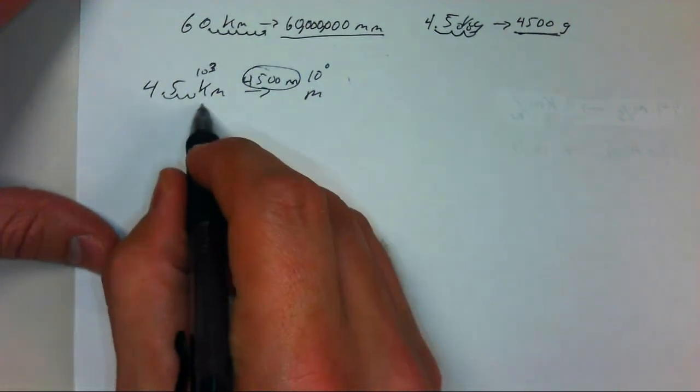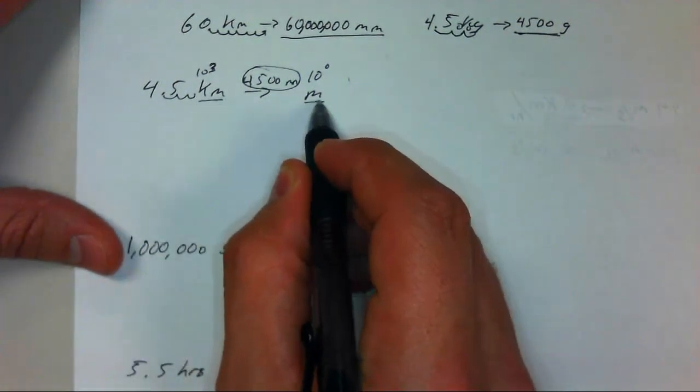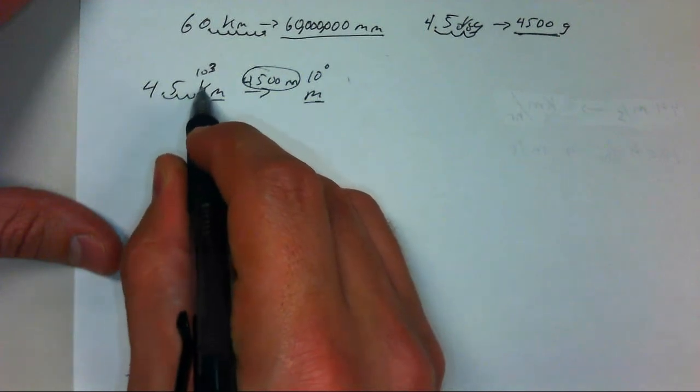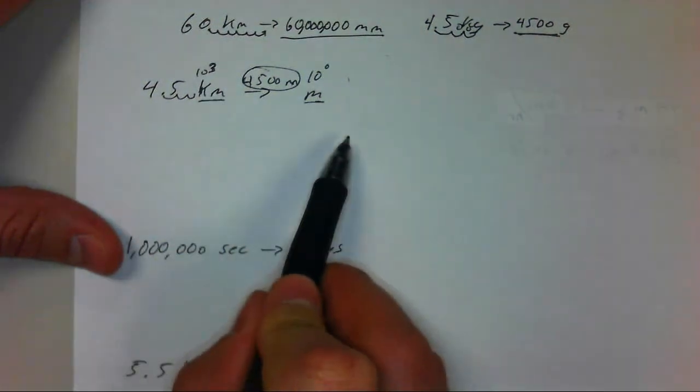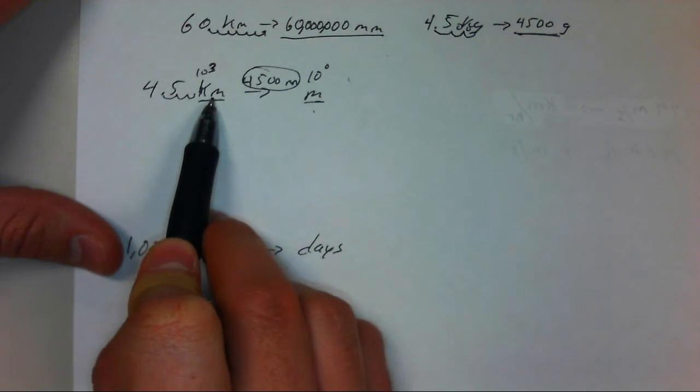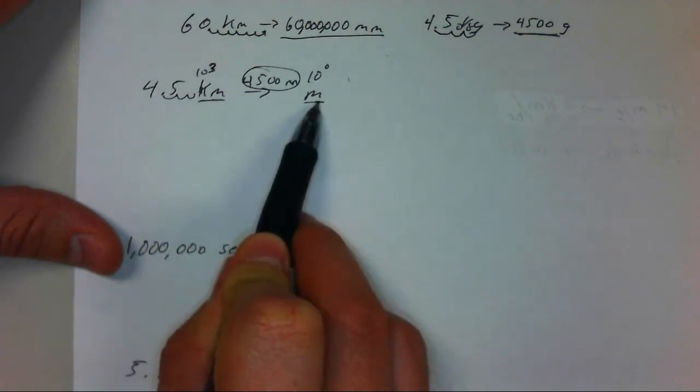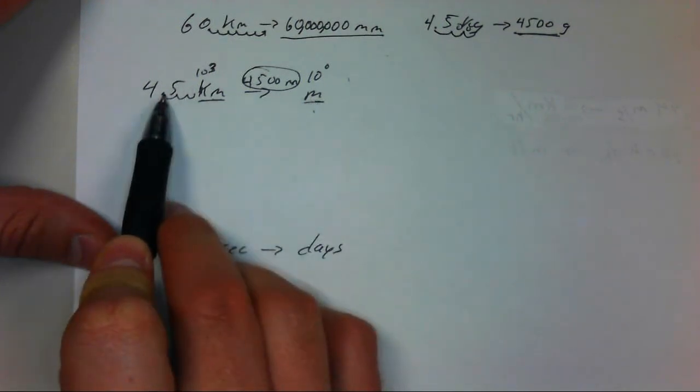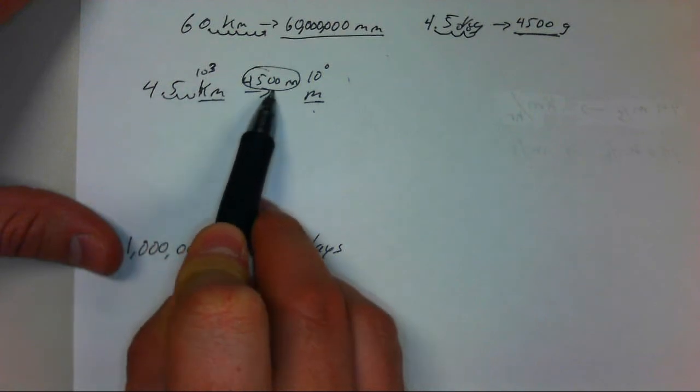If the unit that you're starting from and going to, if you look at those, if your unit is getting smaller, which it is here, a meter is smaller than a kilometer. If your unit is getting smaller, then the number you have should get bigger, which it did.